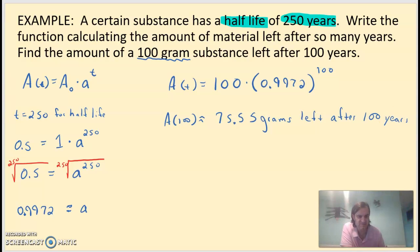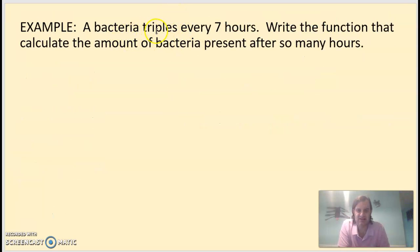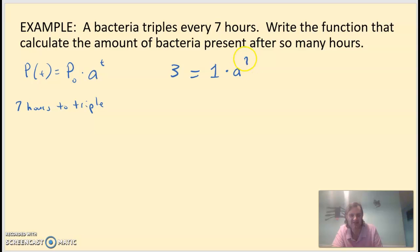Let's do another example. A bacteria triples every seven hours. Write a function that calculates the amount of bacteria present after so many hours. Bacteria is a population, so we can use the P(t) formula. P(t) equals P₀ times a to the t. In this case, we know that it's seven hours to triple. Similar to the half-life, we're not given a specific amount, but we're told how the starting amount and ending amount relate to each other. We can start with one little bacteria and have it end at three bacteria if we want to talk about tripling. We don't know the rate, but it says it would take seven hours to do that.